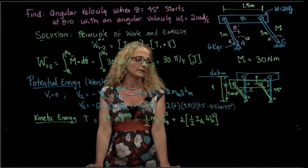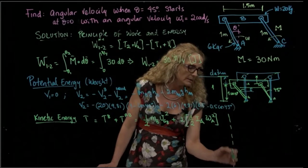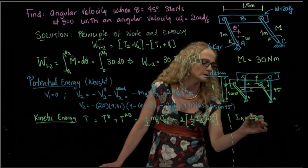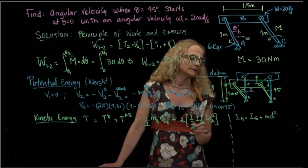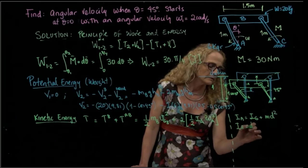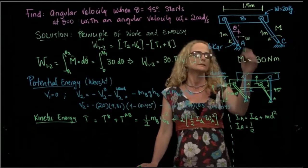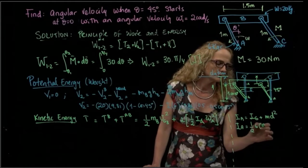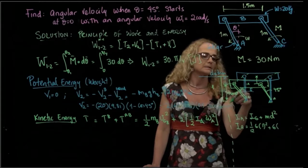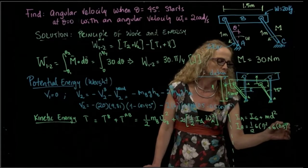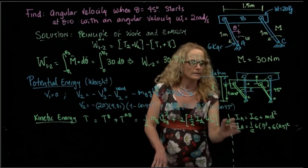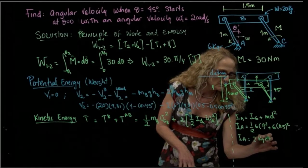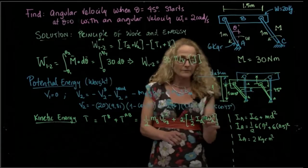How much is the inertia of those rods about point A? We use the parallel axis theorem. The inertia about A equals the inertia about the center of mass plus mass times distance squared. That is one-twelfth times 6 times 1 squared, plus 6 times 0.5 squared. This gives an inertia about point A equal to 2 kilogram-meters squared — and I have that value right here.